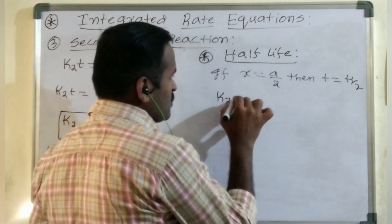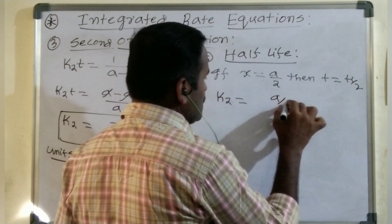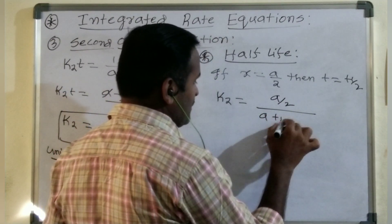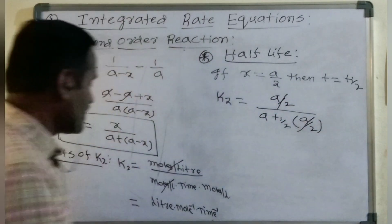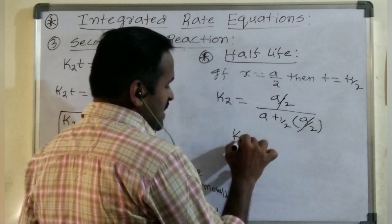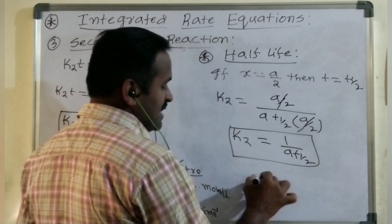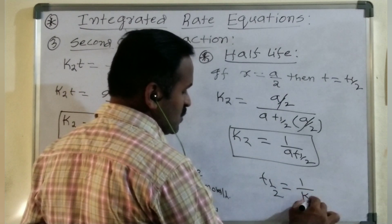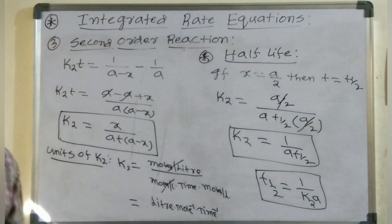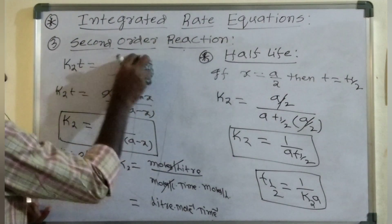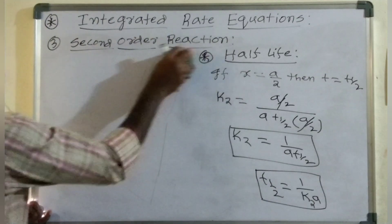We get K2 equals (A/2) divided by A·T½·(A minus A/2). The leftover A minus X becomes A minus A/2 equals A/2. After simplification, K2 equals 1/(A·T½). Therefore T½ equals 1/(K2·a). So T½ is inversely proportional to the initial concentration of reactants.